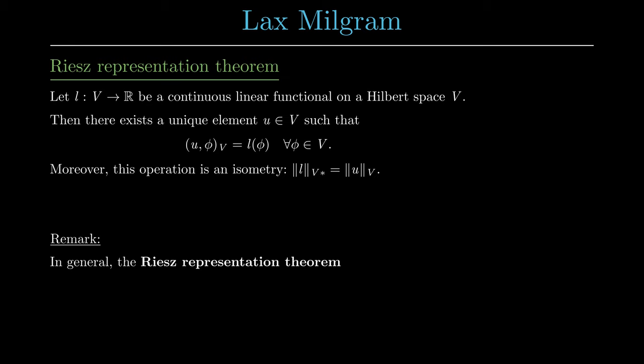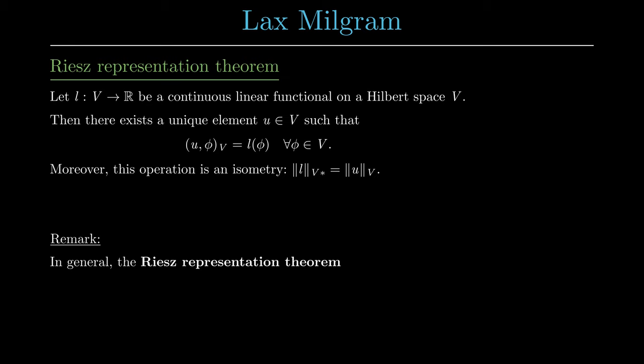We can go even one step further. If we have a symmetric bilinear form, which means that a(u,φ) is the same as a(φ,u), then the Riesz representation theorem yields the existence and uniqueness of the solution to the variational formulation. Since the Riesz representation theorem cannot be applied to all variational formulations, we need a more general tool which can be used for many linear PDEs.